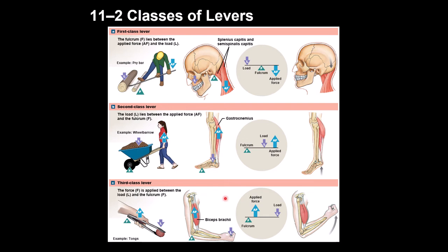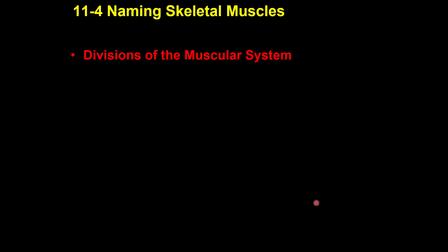The third-class lever has the applied force in the middle, the fulcrum on one side, and the load on the opposite side. This is the most common type of lever found in the body, and an example is the biceps muscle in the arm.